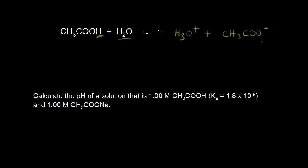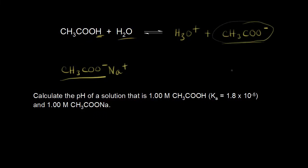There's a concentration of acetate anions in solution. What would happen now if you added some sodium acetate — CH3COO minus and Na plus? If you add some sodium acetate to your solution, you now have some more acetate anions. You're increasing the concentration of one of your products, the acetate anion. According to Le Chatelier's principle, if you increase the concentration of one of the products, the equilibrium shifts to the left.